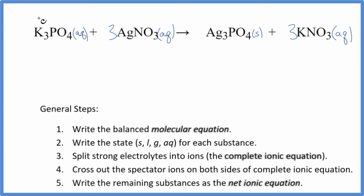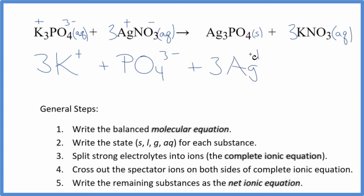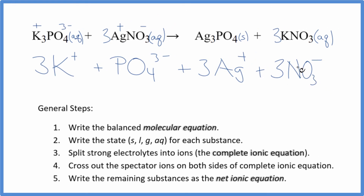Potassium is group one on the periodic table — that's one plus for each one. And then the whole phosphate is three minus — good one to know. So we have three potassium ions plus our phosphate ion. We have silver, which is always one plus, and the whole nitrate is always one minus. So three silver ions and then three nitrate ions. These are the reactants in our complete ionic equation.